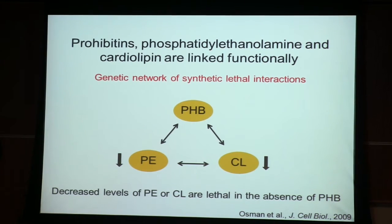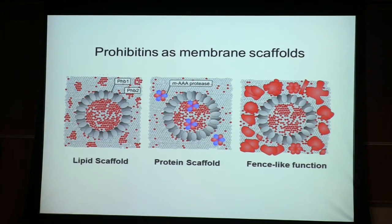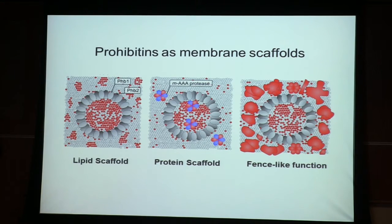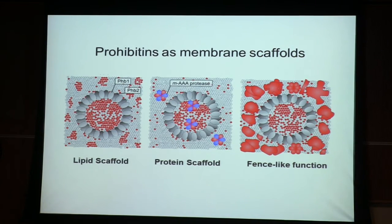This work led us to propose a model of how prohibitins work as membrane scaffolds. We think they are membrane organizers that form large rings in the membrane and recruit specific proteins to specific sites, creating functional domains defined by a defined protein complement. Based on our yeast studies, we also think they may affect the asymmetric distribution of specific phospholipids — PE or cardiolipin — in the inner membrane, defining functional domains with a defined protein and lipid composition.